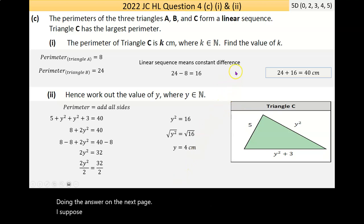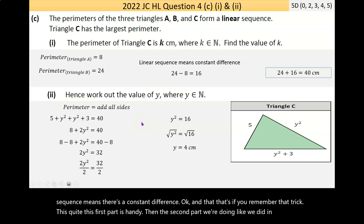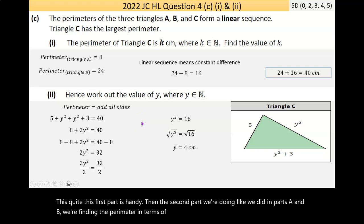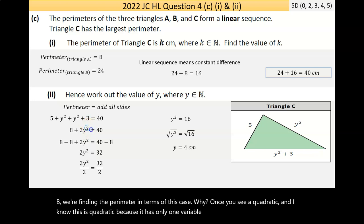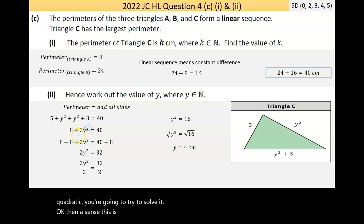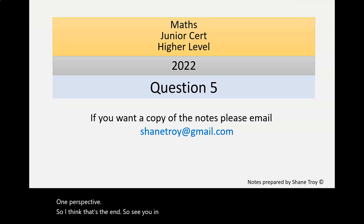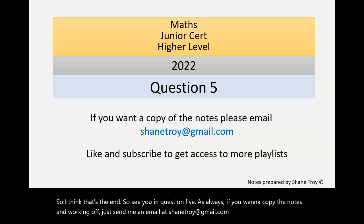And then the answer on the next page, I suppose I did what I should have done. I just found the difference. Again, a linear sequence means there's a constant difference. And if you remember that trick, this first part is handy. In the second part, we're doing like we did in parts A and B. We find the perimeter in terms of y. Once you see a quadratic, and I know this is quadratic because it has only one variable and the largest power is 2, you're going to try to solve it. So I think that's the end. See you on question five. As always, if you want to copy the notes I'm working off, just send me an email at shanetroy@gmail.com. Please like and subscribe.